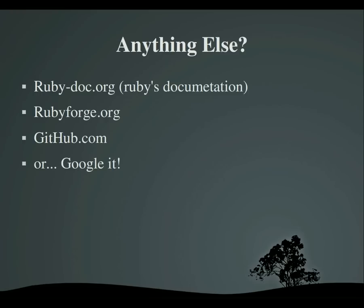If you can't find something, there is actually a very good chance it may already be included in Ruby, so check out rubydoc.org to find it. Otherwise, you can check out rubyforge.org and github.com. They have some pretty good search functions, and rubyforge.org has a map of all the different programs that you can narrow down by categories — really useful. And if all else fails, just Google it.